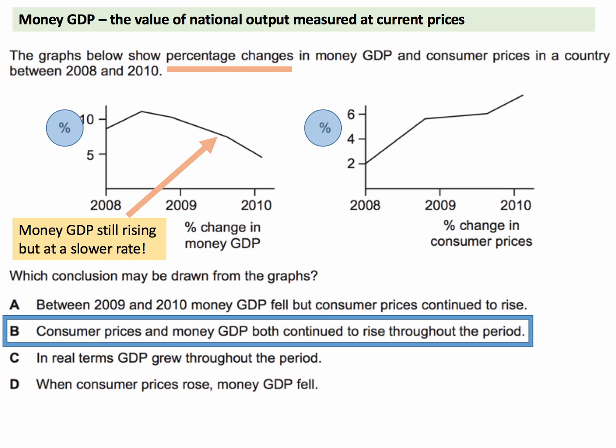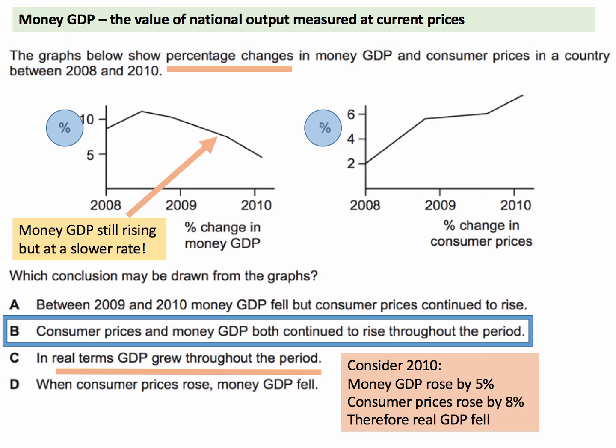Option C: in real terms, GDP grew throughout the period. Consider 2010 to challenge that. Money GDP, looking at the data, probably increased by around five percent. Consumer prices, reading off on the right hand side, probably increased by about eight percent. So money GDP rose by five percent but there was inflation of eight percent — approximately a three percent fall in real GDP. So real GDP didn't grow throughout the period.